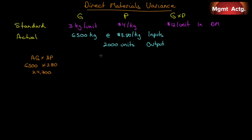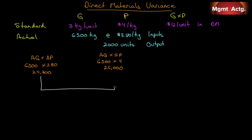We compare that to our actual quantity times the standard price, because we just want to see if price had any effect. It's the same 6,500 times what it should have been, $4.00, and we get $26,000. So $24,700 minus $26,000 is negative $1,300. That is our price variance. When it's negative, it's favorable, so we'll put $1,300 favorable.